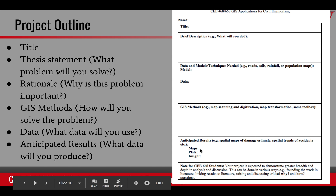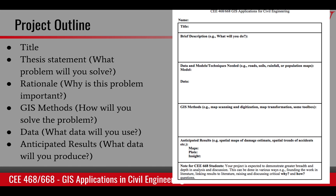For example, if the output of your project is going to be a map of accident density in the city, then say here that your output will be a map of accident density. And then inside you can say your map will help us better understand how accidents are distributed in the city or how they are related to traffic density.